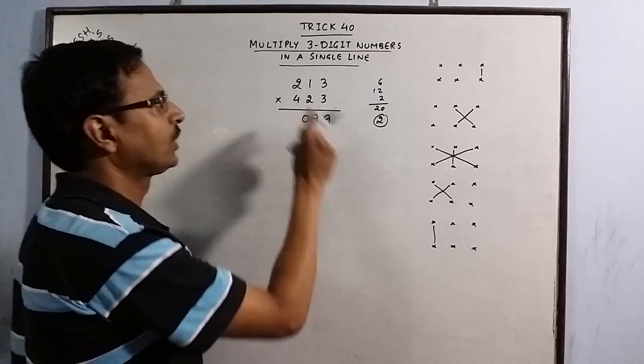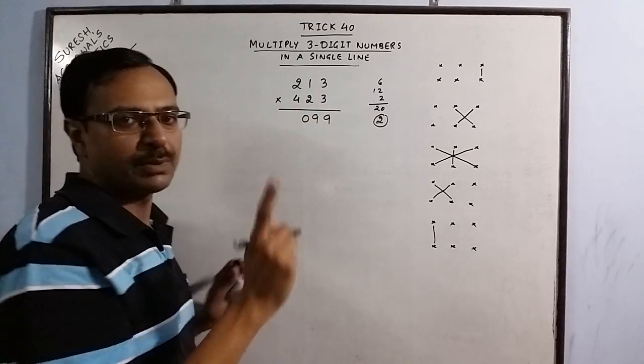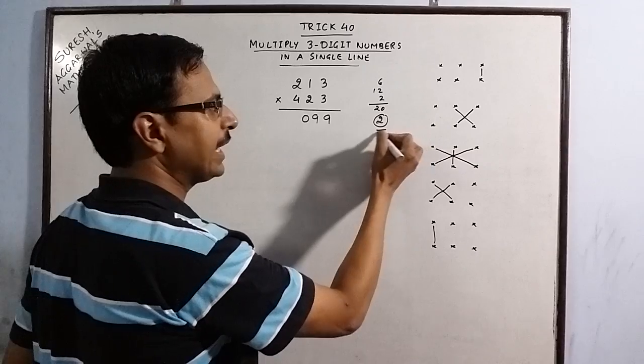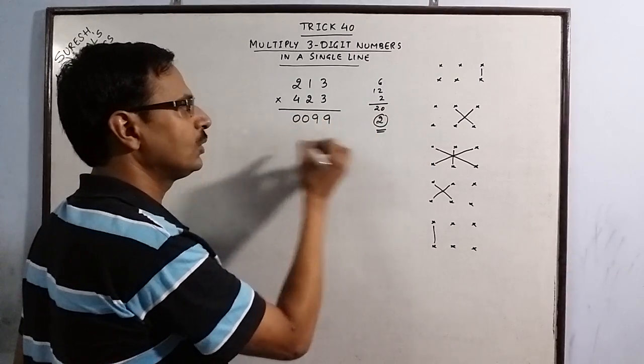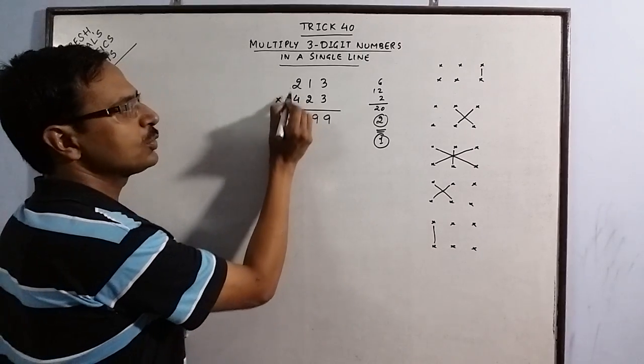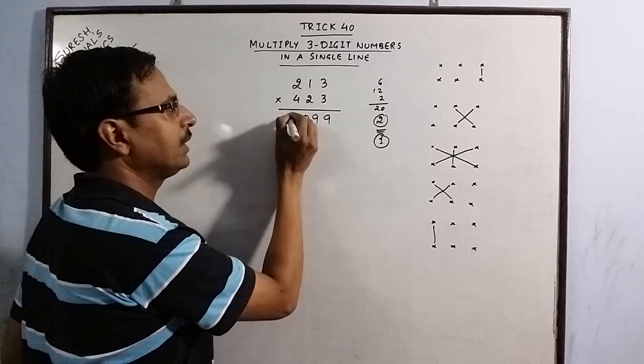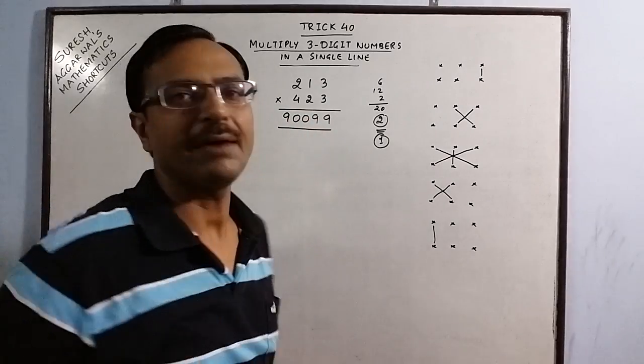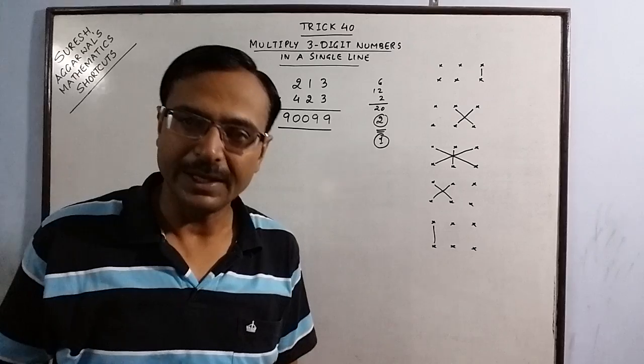Now the next one 2×2 the 4, 1×4 the 4, so 4 plus 4 is 8 and 2 carry gives us 10. So we have again 0 and 1 carry. And final digit 4×2 the 8, last step 4×2 the 8 plus 1, 9. So here we have the product of 213 and 423 in a single line.